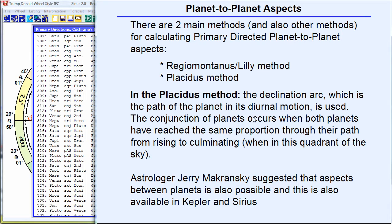In the Placidus method, a planet is conjunct using the method of Placidus — these declination arcs. What you do with the Placidian method is see how long it takes for each planet from rising to culminating, then culminating to setting, etc. When two planets reach the same proportion through that arc, they're considered conjunct. The Placidian method is elegant in the sense that you're using the actual arcs of the planets. I have another tutorial video specifically on how house cusps are calculated using the Placidus method.